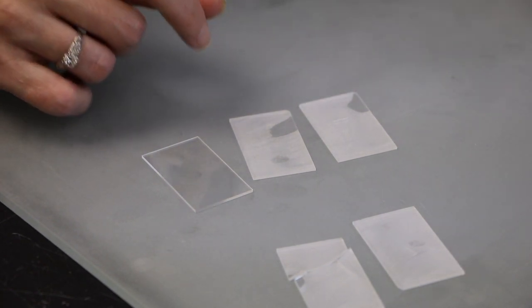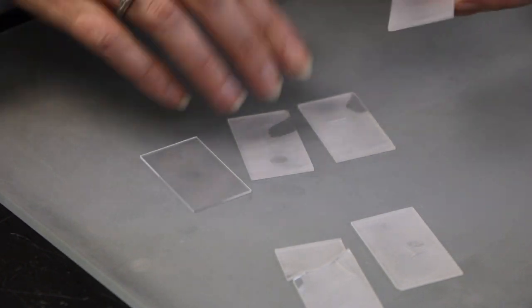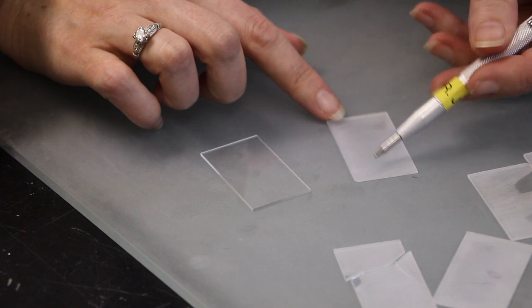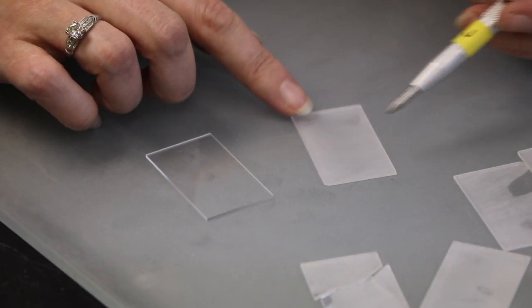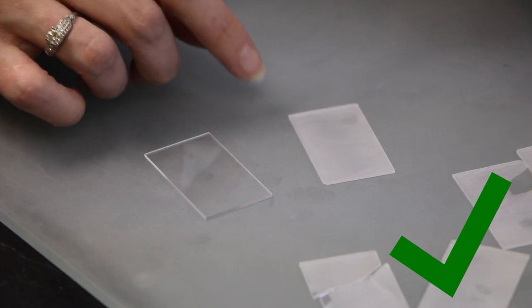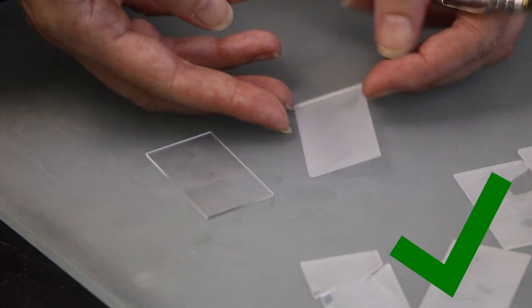So I will actually show you one example of what this is supposed to look like, which is just something that's completely translucent or frosted all the way across. So that's what we're aiming for when we frost the slides.